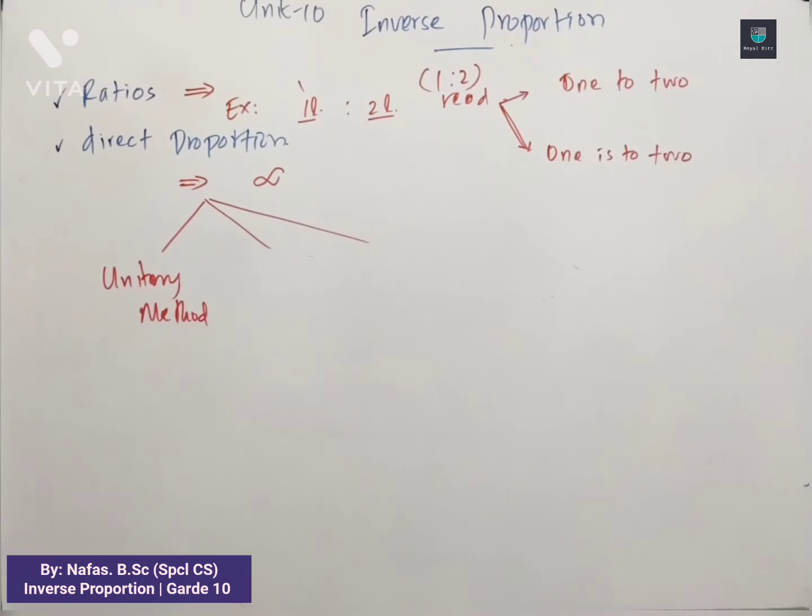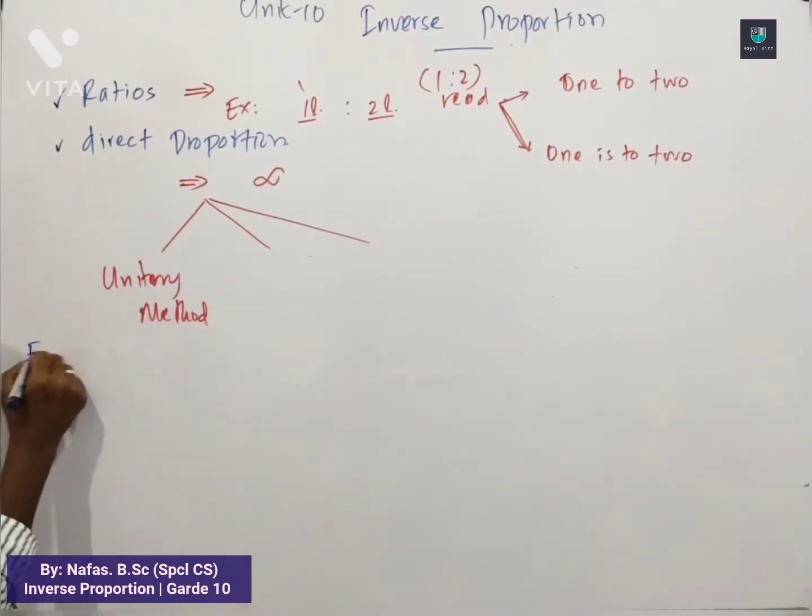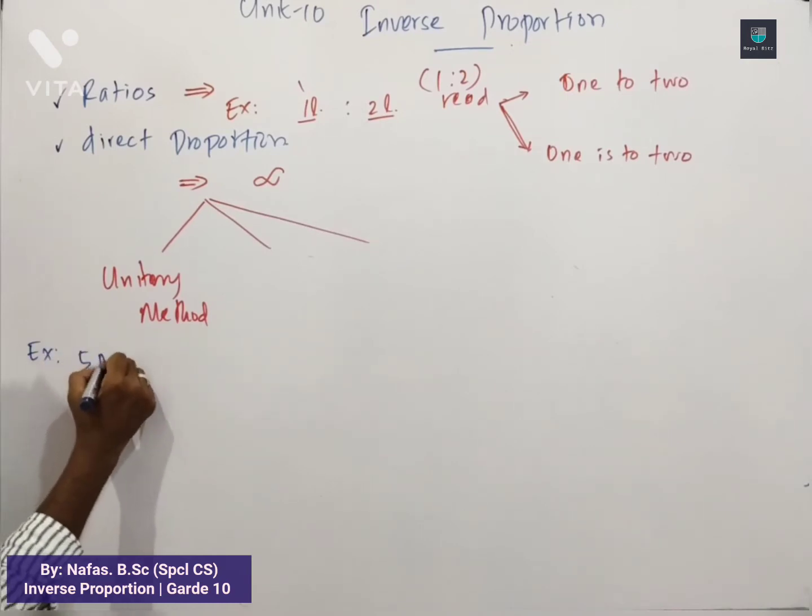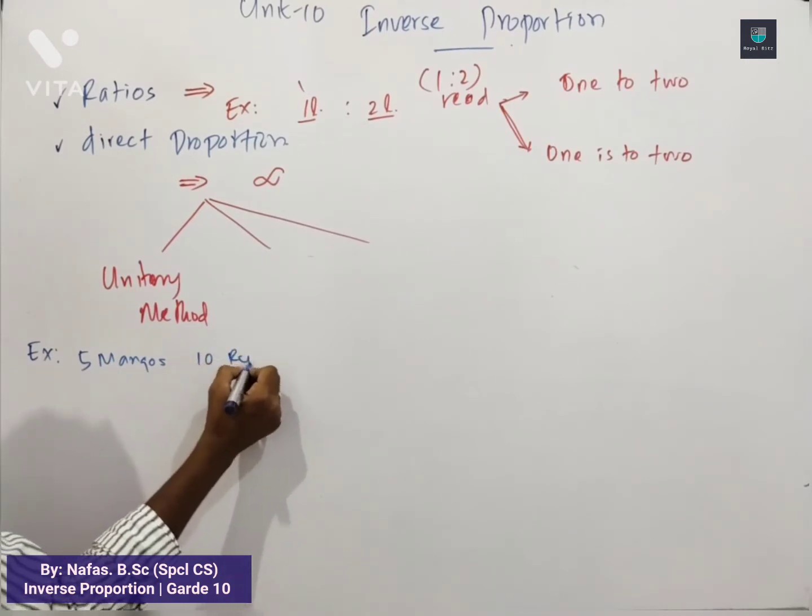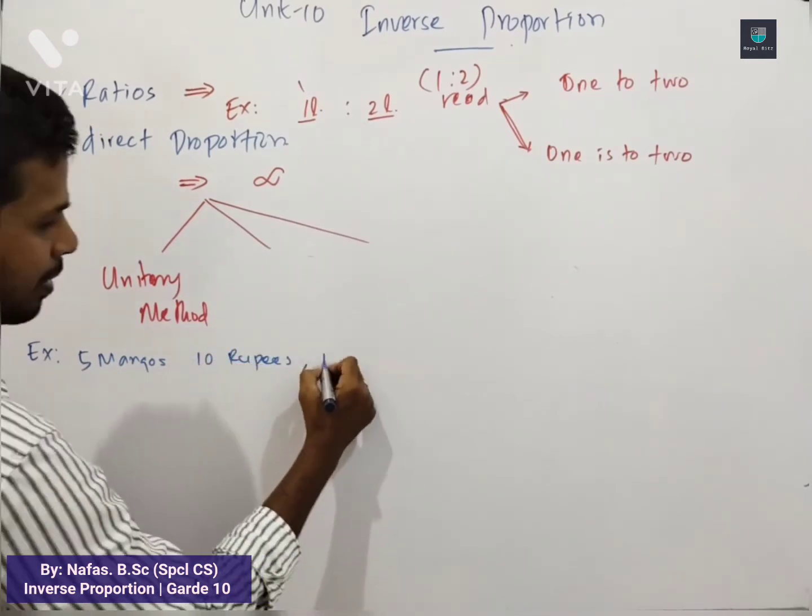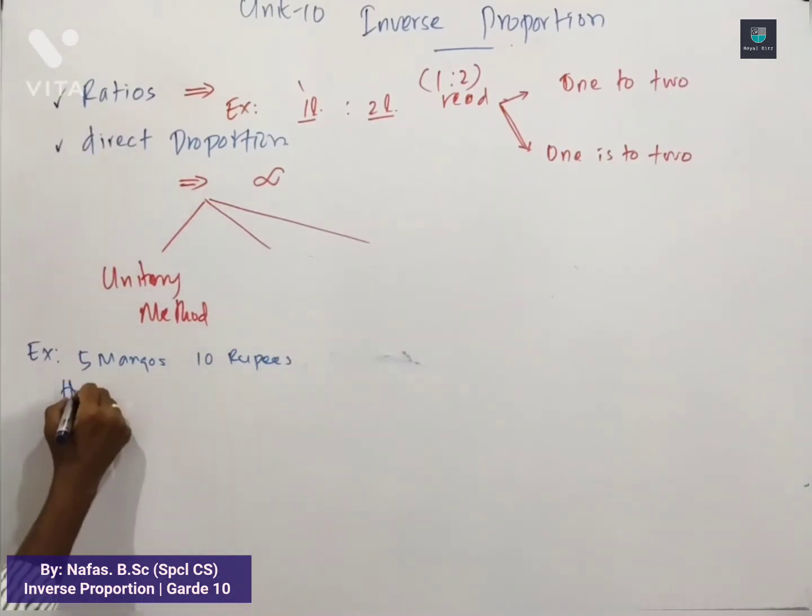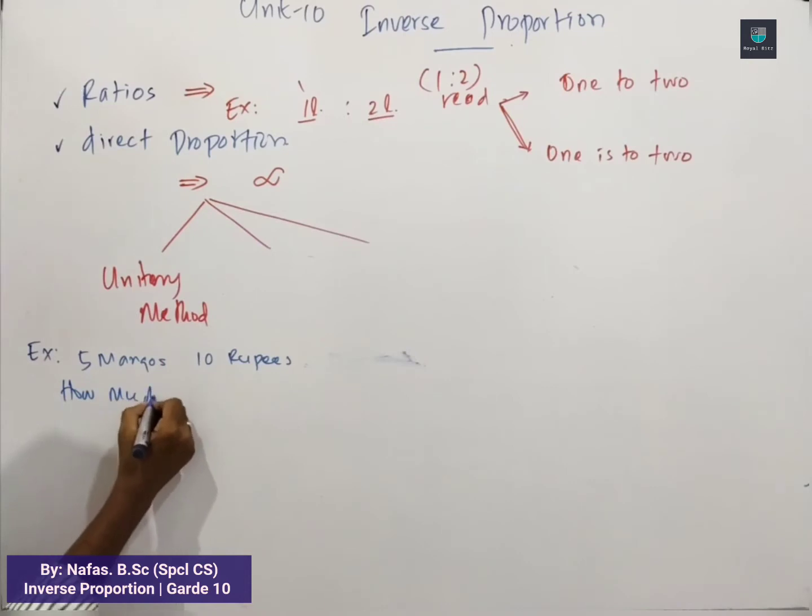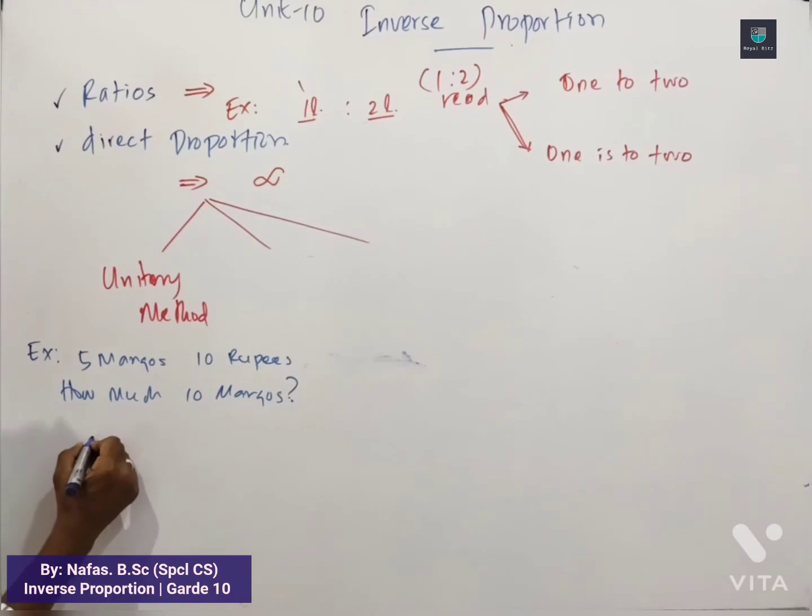For example, Five Mangos Ten Rupees. How much? How much Ten Mangos? So how can we find out? You need to find Mangoes. Five Mangos Ten Rupees.